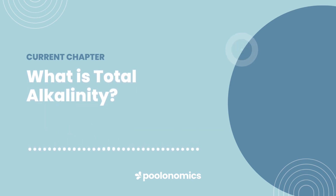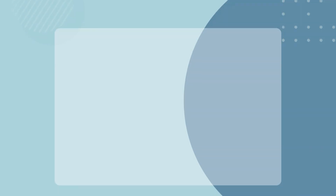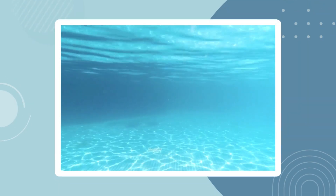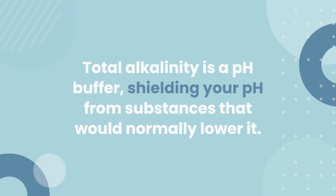What is total alkalinity? Total alkalinity, often abbreviated to TA, measures your water's ability to resist change in pH. This works by absorbing acids in the water, thereby preventing those acids from lowering your pH level. This is why total alkalinity is called a pH buffer, because it shields your pH from substances that would normally lower it.